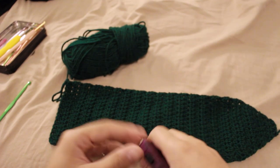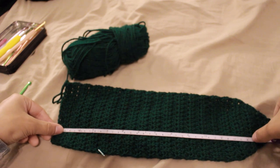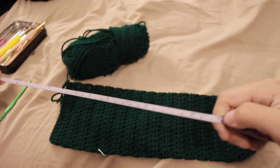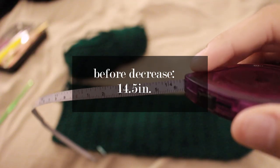For rows 1 through 28, I decided to measure just how long it is, and before we begin decreasing, it is 14.5 inches.